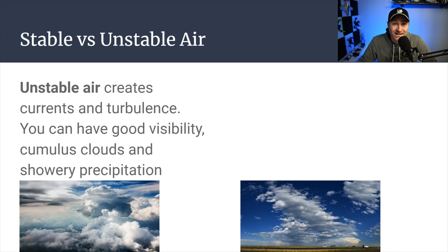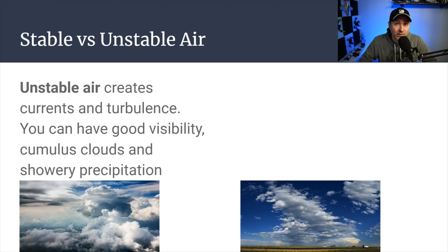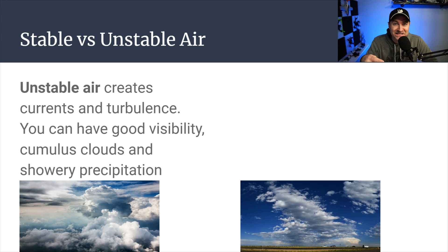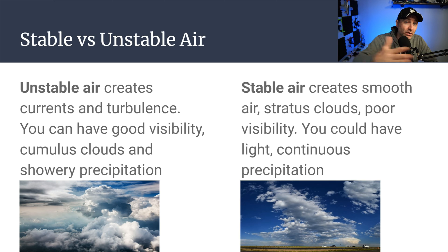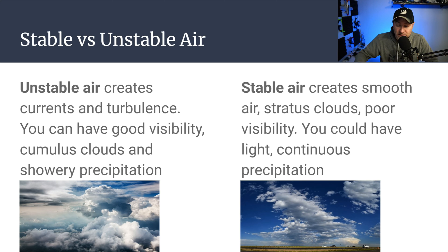There are always questions about stable versus unstable air. Unstable air is created with turbulence — air currents are moving, so generally you can have good visibility because any fog or smoke gets cleared out. You'll get storm clouds, the big puffy clouds — the FAA calls it showery precipitation, meaning it's basically raining hard. Stable air is where the air is just not moving a lot — smooth air. You'll see stratus clouds, those layered clouds. Visibility may be poor because the air isn't moving through; there's haze, fog, or smoke that just stays there. You might have light or continuous precipitation because the currents aren't moving the air through quickly.